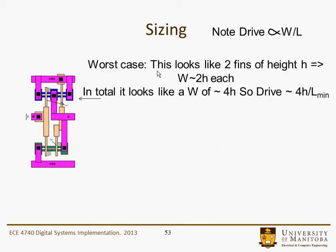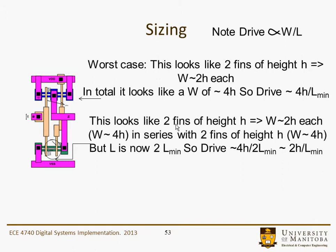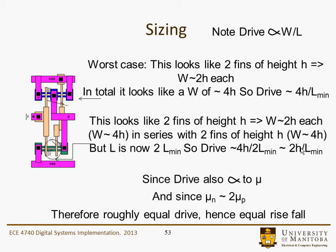For the NAND gate configuration, we'll just look at the worst case. The worst case is where one transistor does the pull-up, and in the pull-down case both transistors have to be on. In the pull-up, two fins of height H each look like a W of 2H, so in total a 4H width — drive is 4H over L-min. In the pull-down section, two fins of height H give W of 4H, and it's in series with another set of two fins also of W = 4H. But now L can be thought of as 2L-min. So the drive looks like 4H over 2L-min, which is 2H over L-min. Again, out by a factor of 2, compensated by the fact that hole mobility is half that of electron mobility — giving roughly equal fall and rise time for the worst-case scenario.